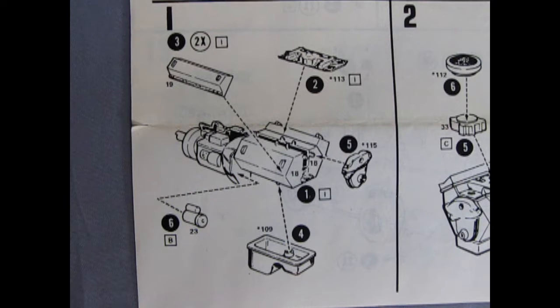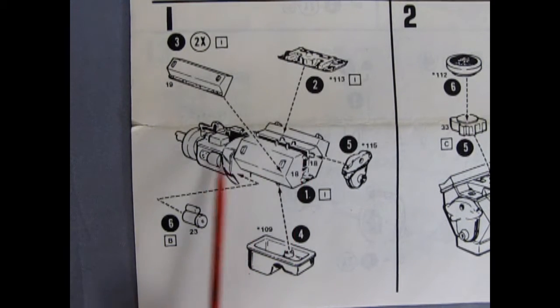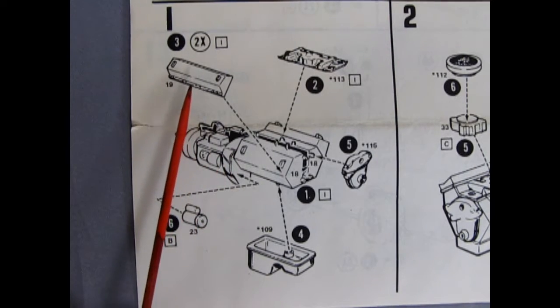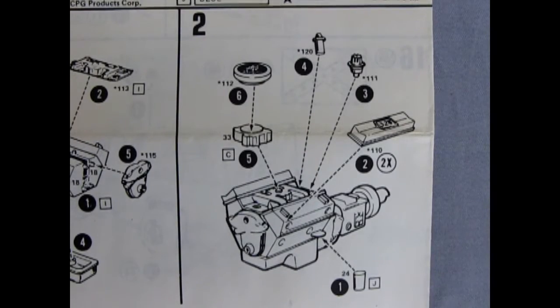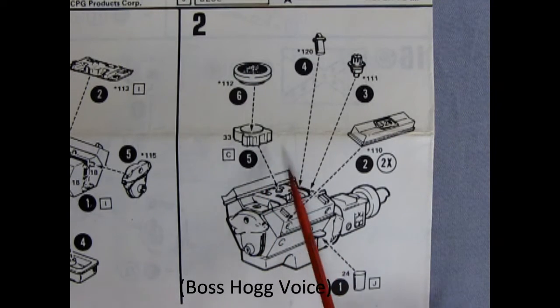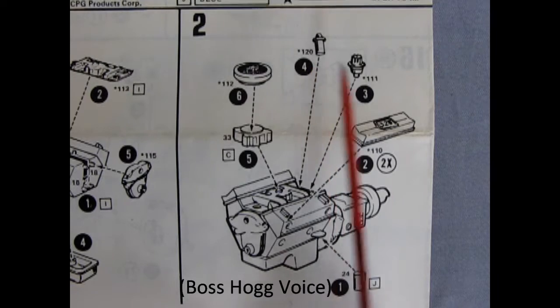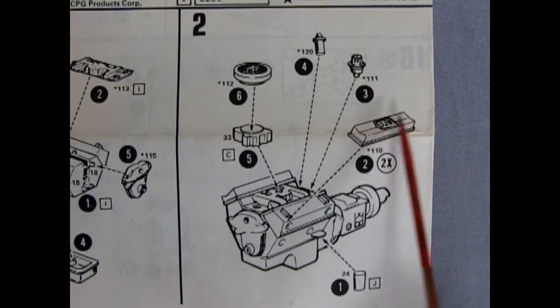Here we've got our Cooter's tow truck Dukes of Hazzard instruction sheet. We'll start our adventure with our engine block. We've got a right and left hand side with the transmission molded in place, our cylinder heads, intake manifold, starter motor, chrome oil pan and chrome front cover. In fact the manifold is chrome too.